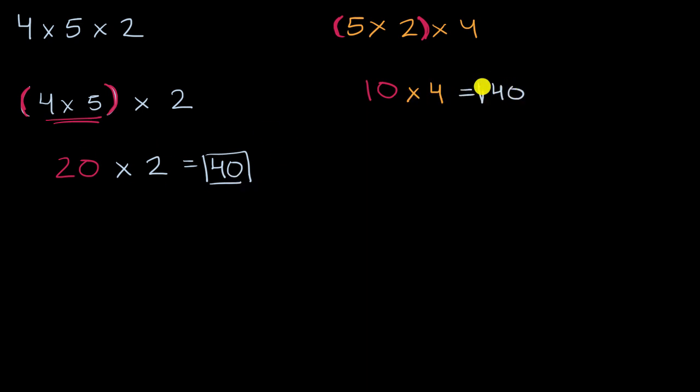Is there something interesting going on? And the interesting thing that you might realize is in both cases, we're multiplying the same three numbers. We are just doing it in a different order. Here we wrote it out as 4 times 5 times 2. Here we wrote 5 times 2 times 4. Here we did the 4 times 5 first. Here we did the 5 times 2 first. But notice, we got the same result.